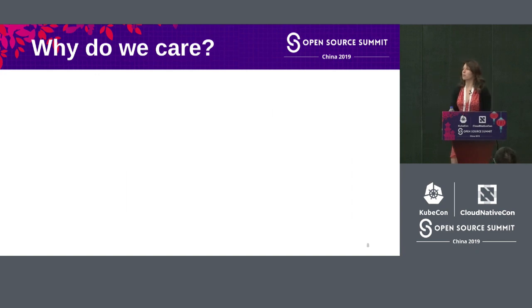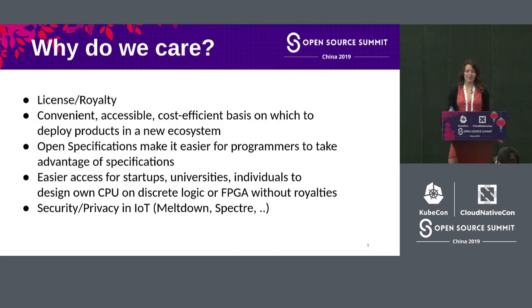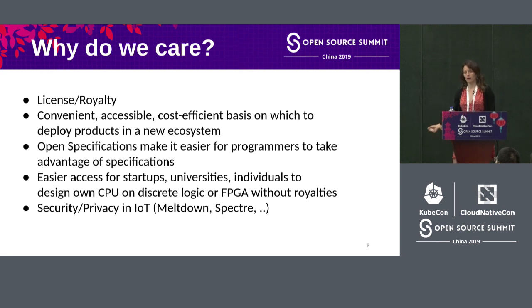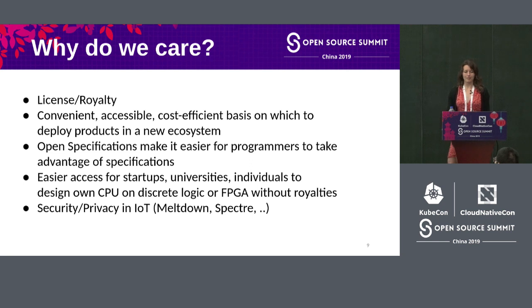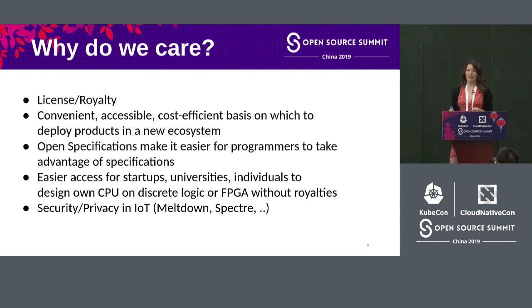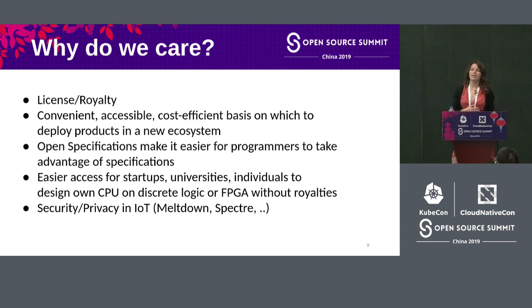Why do we care about open hardware processors? For one, it's about license fees. If you want to implement your own ARM architecture you'd need to pay royalties to ARM. So if a startup wants a quick prototype, or a university wants to teach architecture to students, there was nothing available until now. That's where RISC-V comes in. The whole idea is also to democratize the process — anyone, company or individual, can join the RISC-V foundation and discuss what features to include.